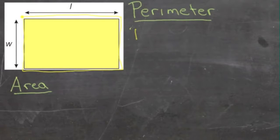There's a formula that looks like this: P for perimeter equals L plus W plus L plus W. We can simplify that a little bit by grouping the L's and the W's together, which gives us P equals 2L plus 2W.